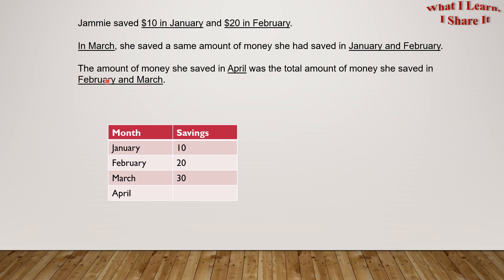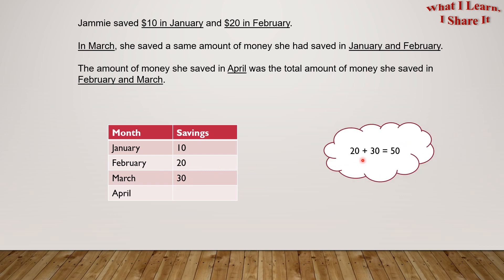The amount of money she saved in April was the total amount of money she saved in February and March. In February she saved $20 and in March she saved $30. So, $20 plus $30 equals $50. In the month of April, she saved $50.